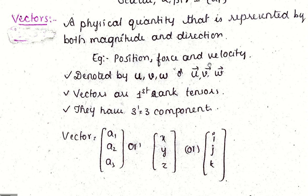Vectors can also be represented as U arrow, V arrow, W arrow. Vectors are first rank tensors or rank 1 tensors, but we cannot say all rank 1 tensors are vectors. They have 3